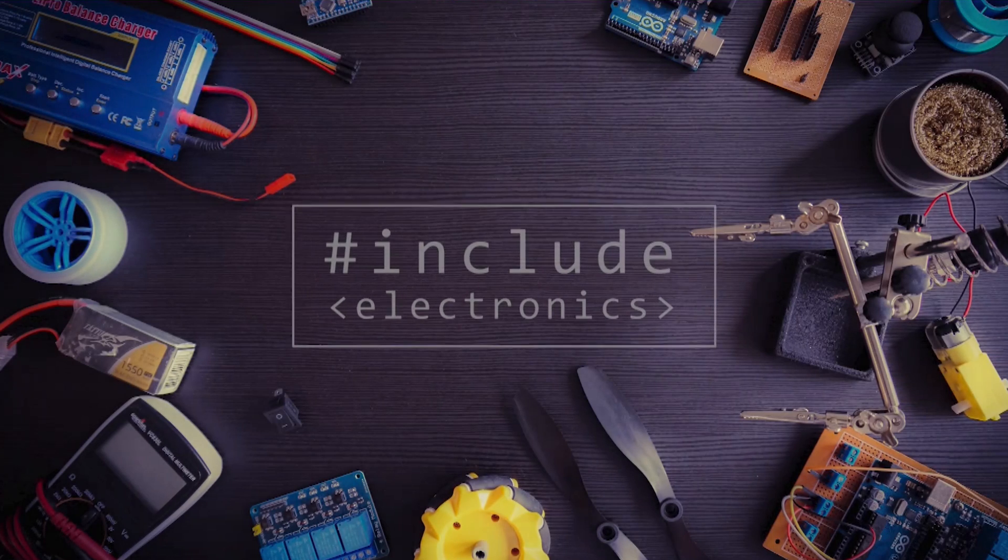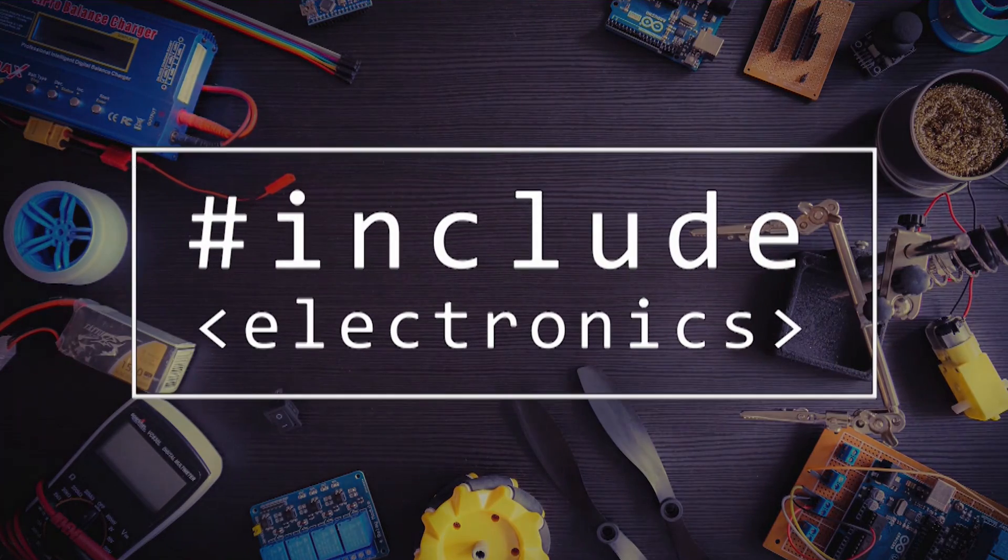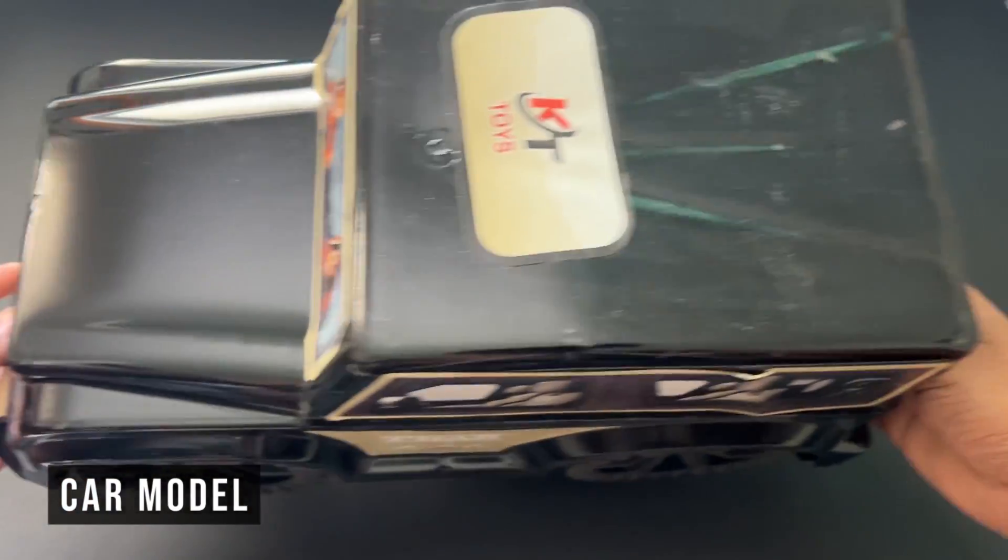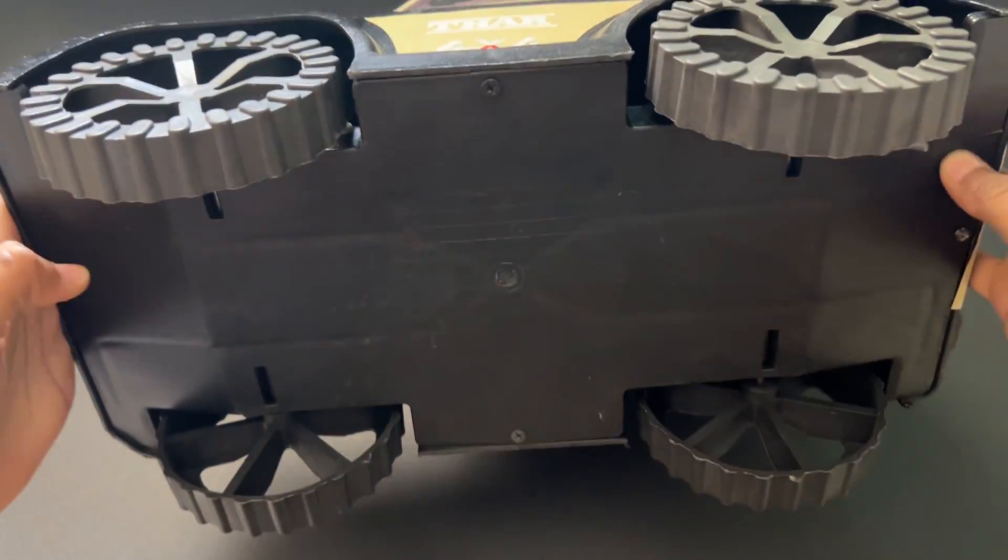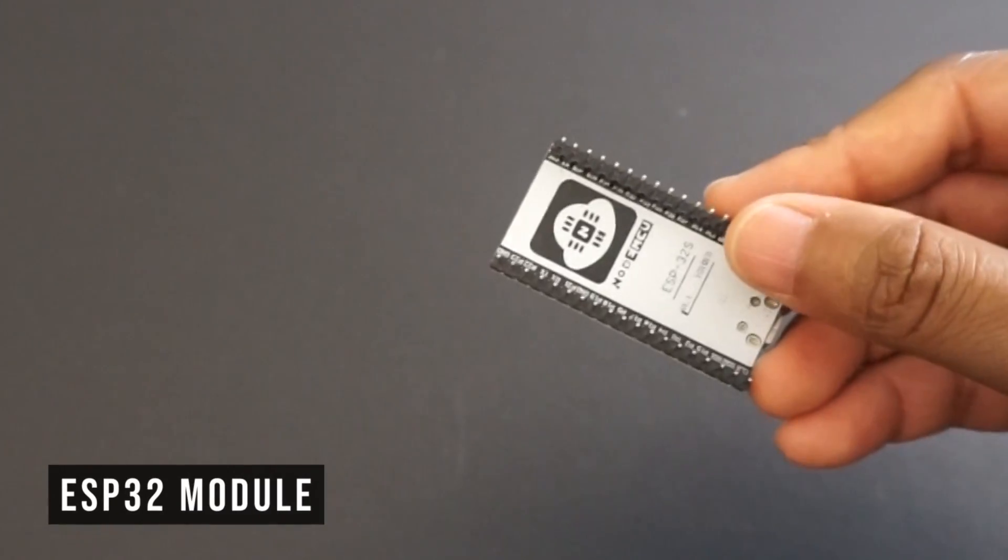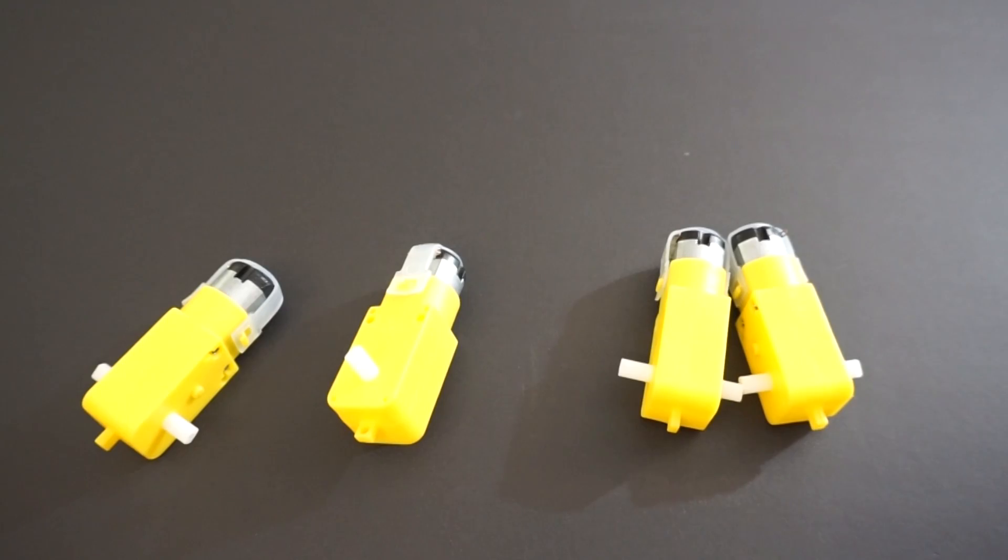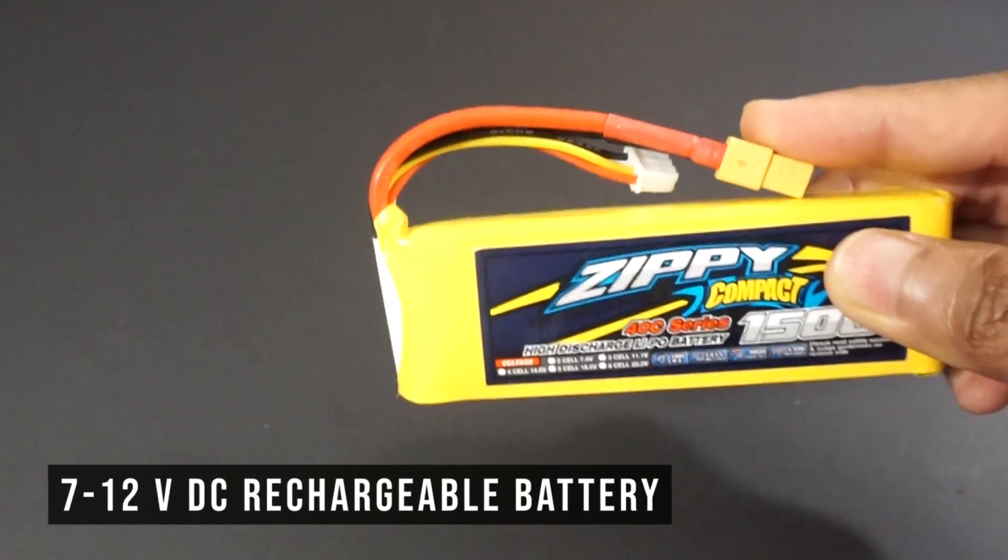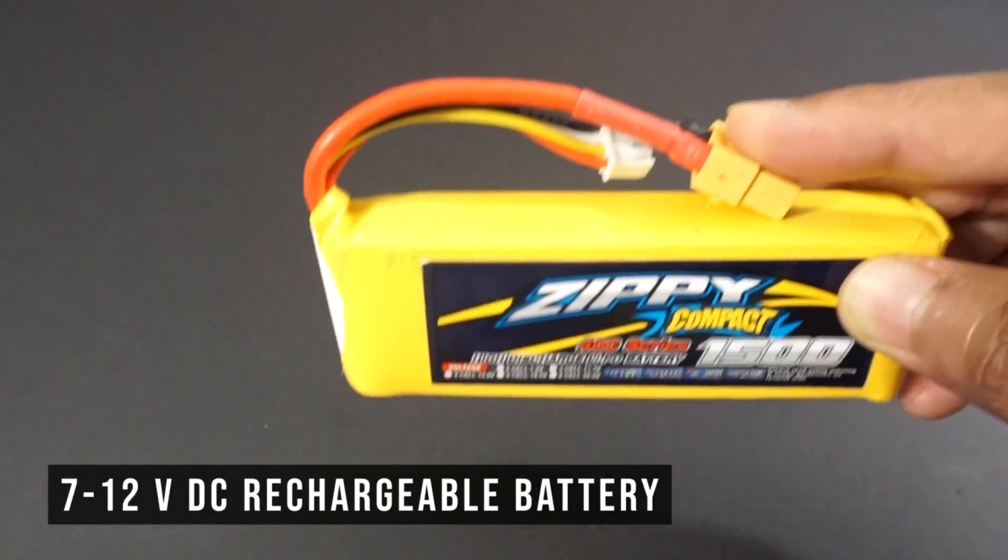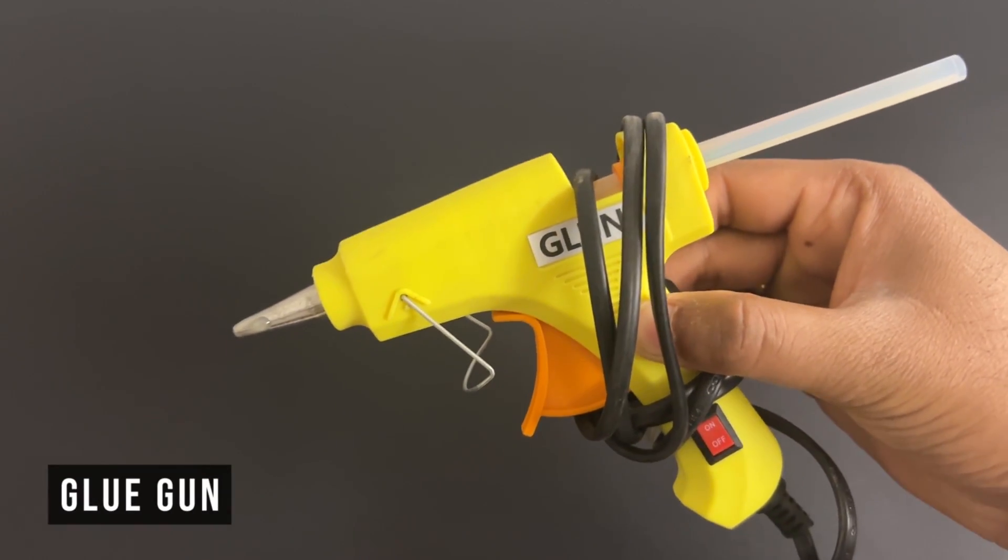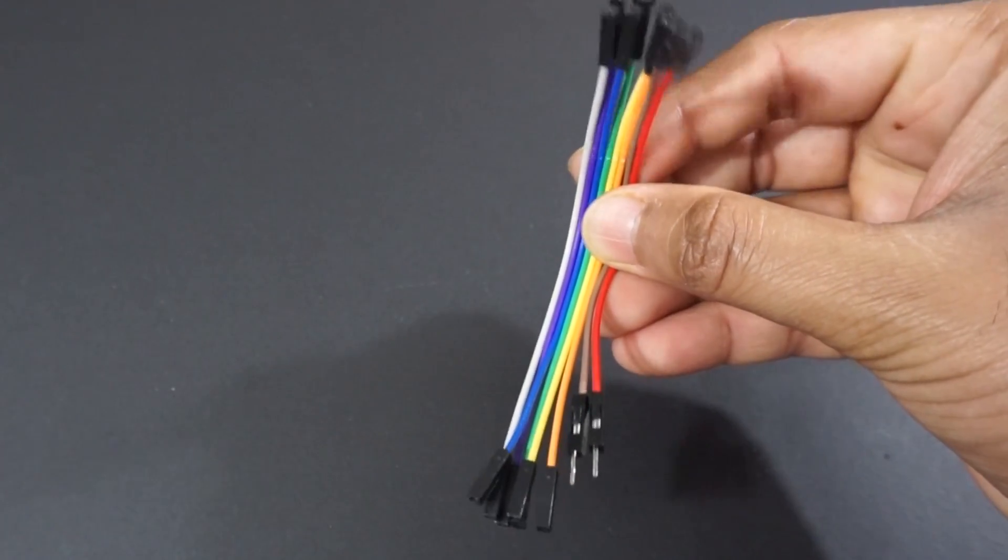If you haven't subscribed, please hit the subscribe button below and press the bell icon to get latest updates. For making this car we will need the car model, ESP32 module, 4 TT gear motors, L298N motor driver module, 7 to 12 volt DC battery (in our case a LiPo 3S battery), double-sided tape, glue gun, and a few jumper wires.